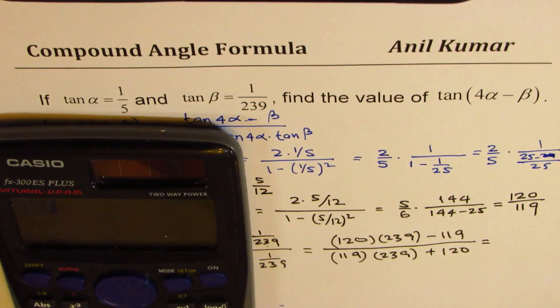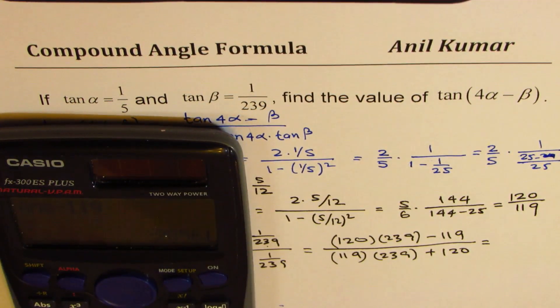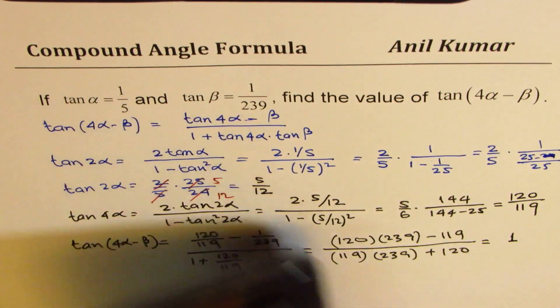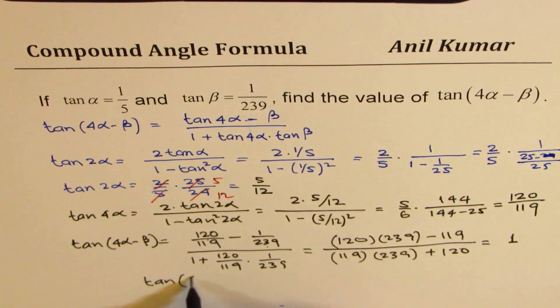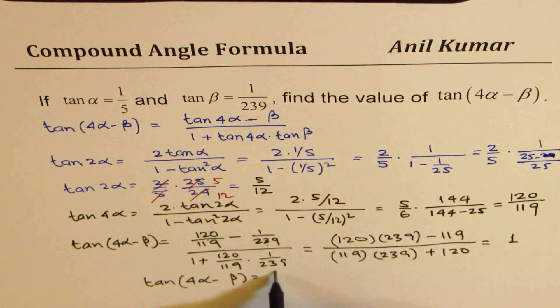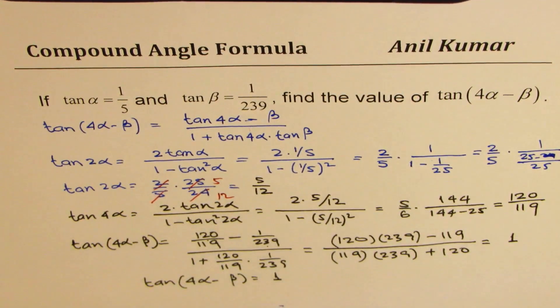So let's do it. 120 times 239 minus 119, that's the numerator. And we'll divide this by all that, so we'll put it in brackets, 119 times 239, and then we'll add 120 to this. Bracket close equal to, we get 1. So that is the result. So if you do this, you get tan 4 alpha minus beta as equal to 1. So I hope these steps are absolutely clear.